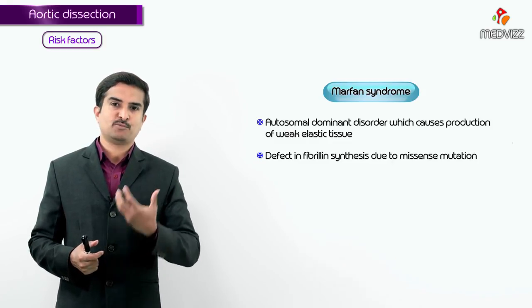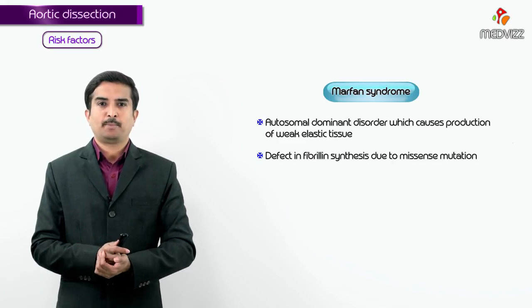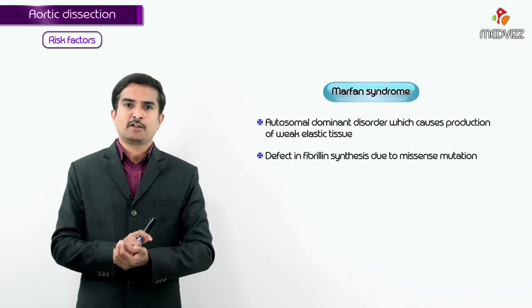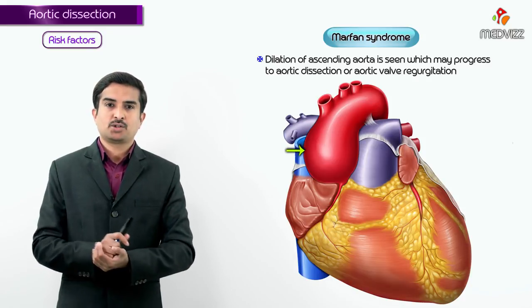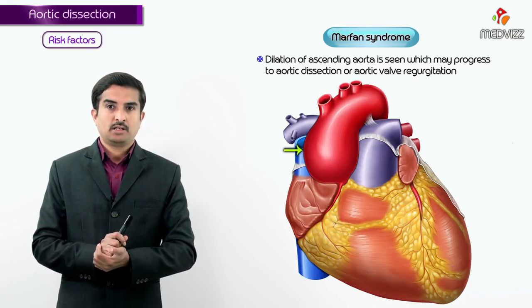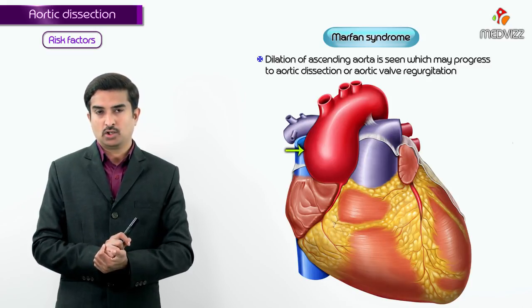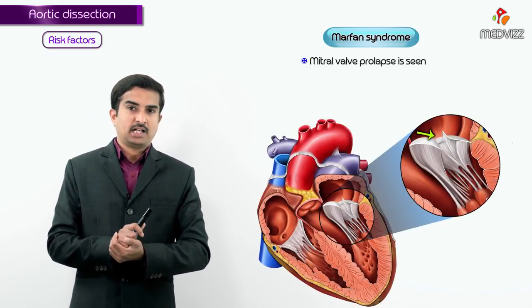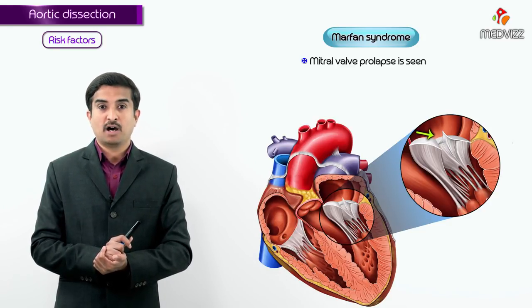The autosomal dominant missense mutation causes defective fibrillin synthesis, which weakens the vessel wall. In Marfan syndrome, there will be dilation of the ascending aorta that may progress to aortic dissection, as well as aortic valve regurgitation. Mitral valve prolapse can also be seen in Marfan syndrome.